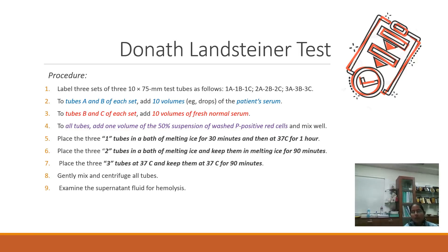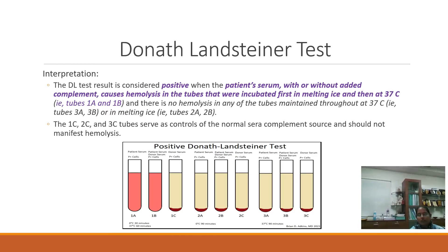For incubation: place Set 1 tubes (1a, 1b, 1c) in a bath of melting ice for 30 minutes, then at 37 degrees Celsius for one hour. Place Set 2 tubes in a bath of melting ice and keep them there for 90 minutes. Place Set 3 tubes at 37 degrees Celsius and keep them there for 90 minutes. After incubation, gently mix all tubes, centrifuge them, and examine the supernatant fluid for hemolysis.